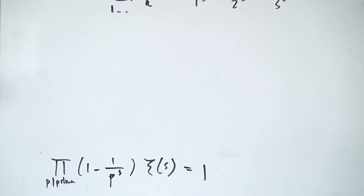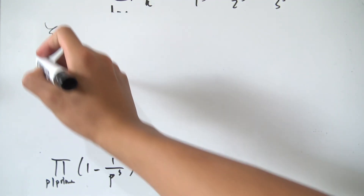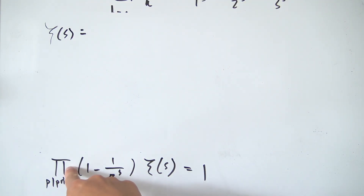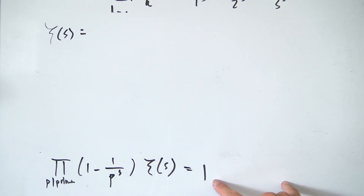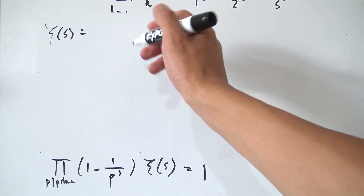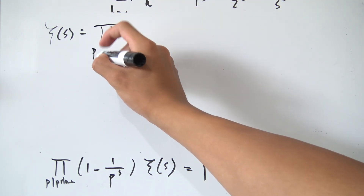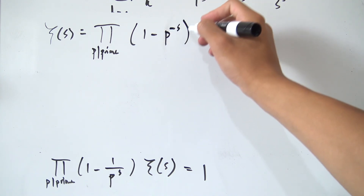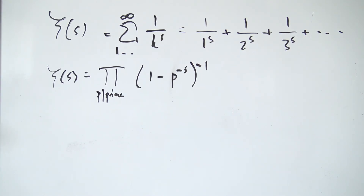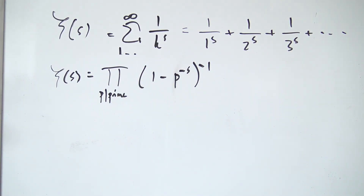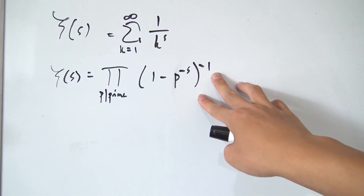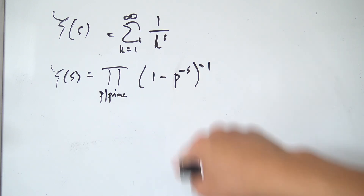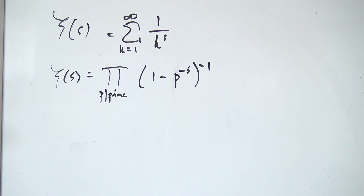We're now ready to express ζ(s) in terms of its infinite product. Dividing both sides by the infinite product, we get ζ(s) equals the product over all primes p of (1 − p^(−s))^(−1). This is called the Euler product for our zeta function. It's remarkable that all the prime numbers that could possibly exist appear inside this product, and they all contribute to form the zeta function. Hope you enjoyed, have a wonderful day, and I'll see everyone next time.